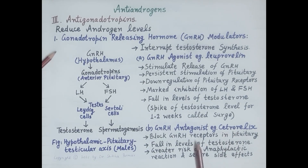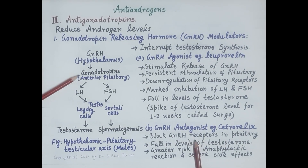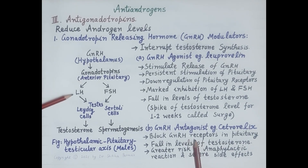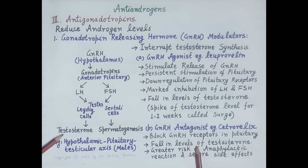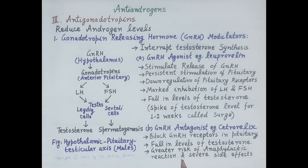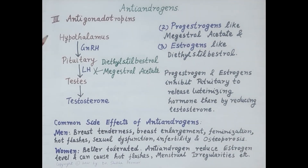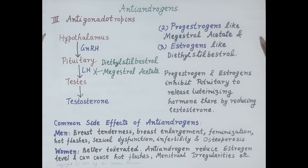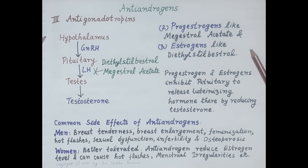GnRH antagonists block GnRH receptors in the anterior pituitary. Because of this receptor blockade, there is reduced production of LH, causing a fall in testosterone levels. These drugs are associated with a greater risk of anaphylactic reactions and show severe side effects.